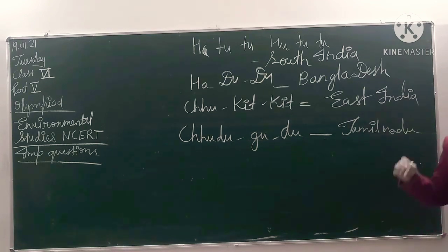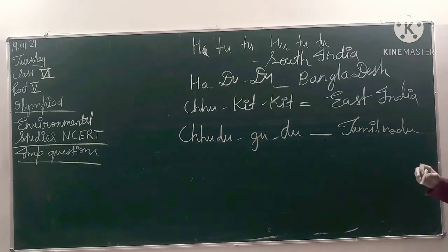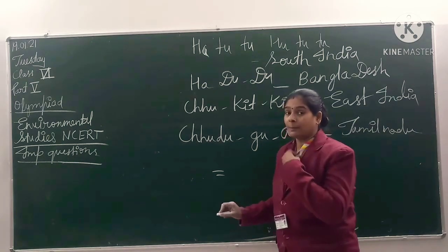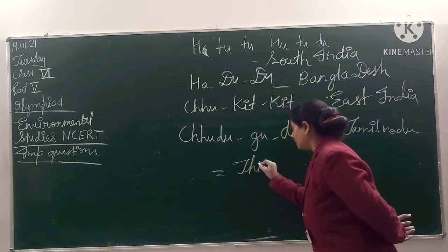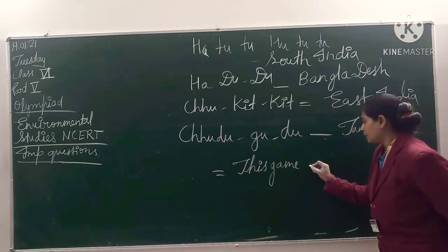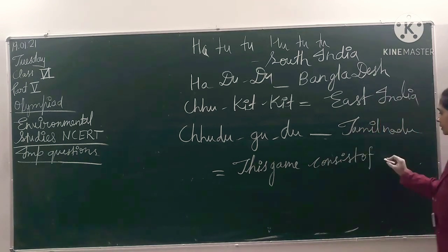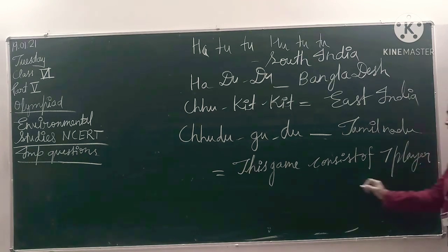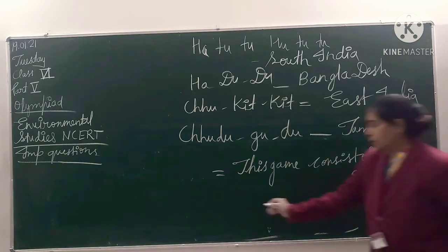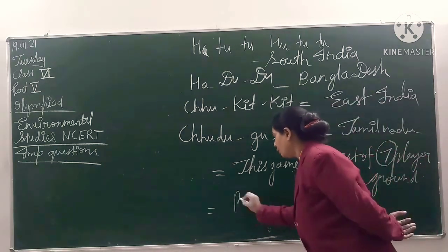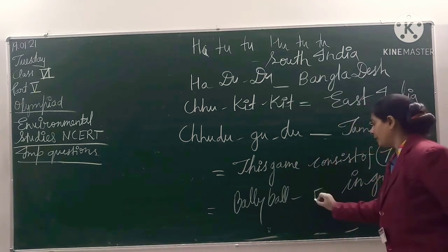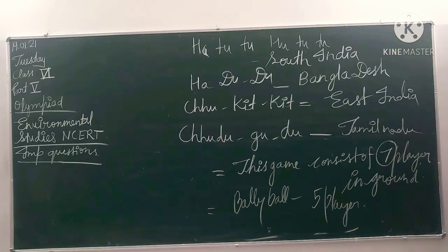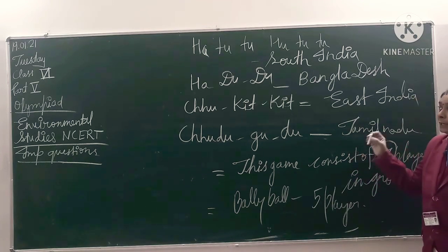The Kabaddi game is played between two teams. Both sides of the ground consist of seven players. This game consists of seven players on each side.